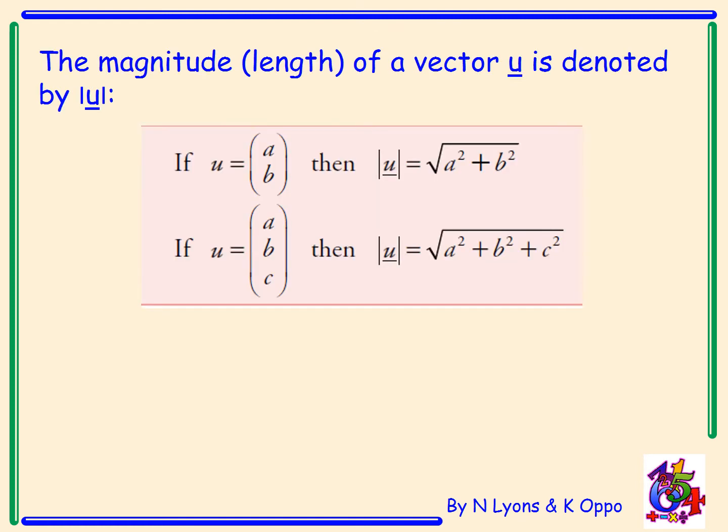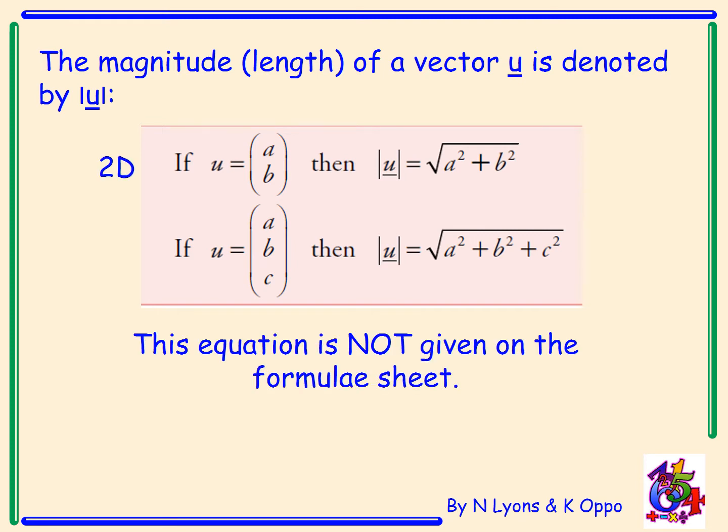Let's get started. So the magnitude, that is the length of a vector, is denoted as shown. If u equals components a, b then the magnitude of that vector u equals the components squared added together and then you take the square root. So this is just like having Pythagoras in 2D.